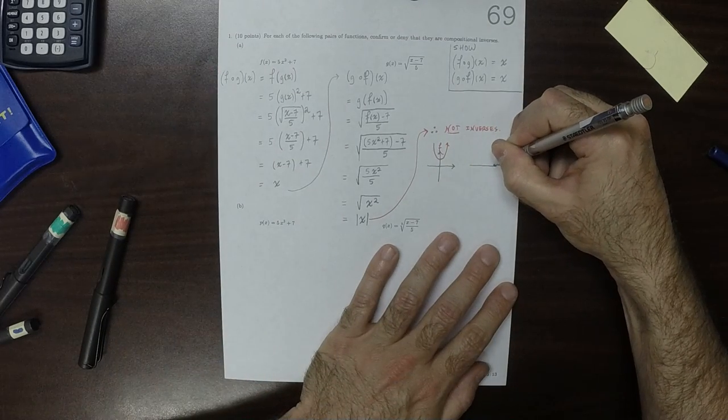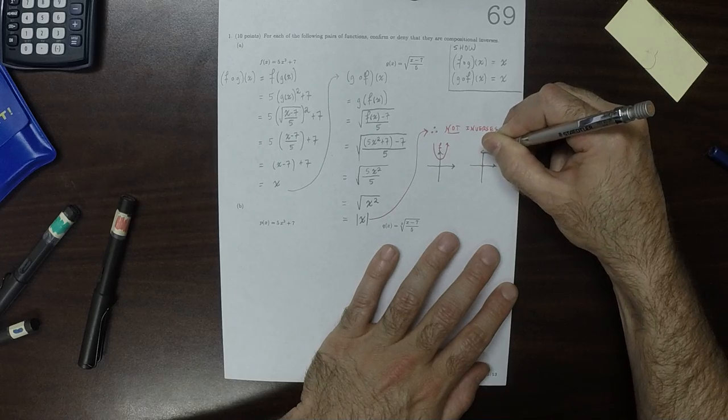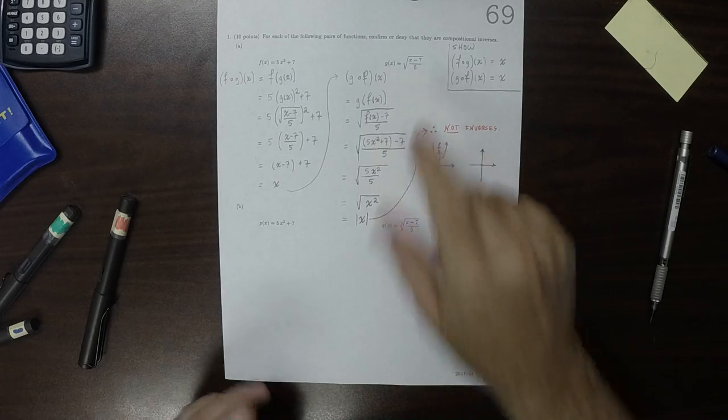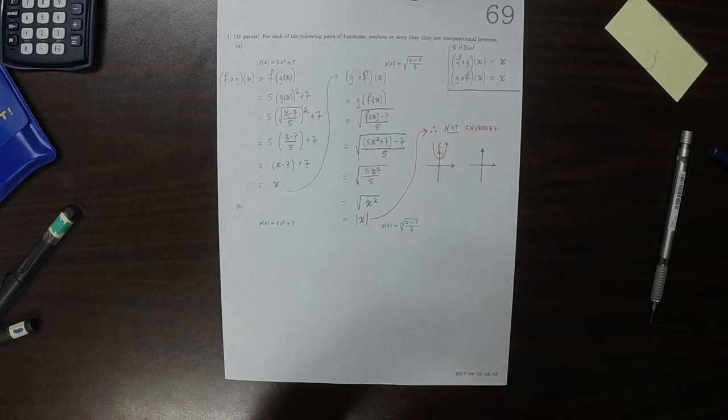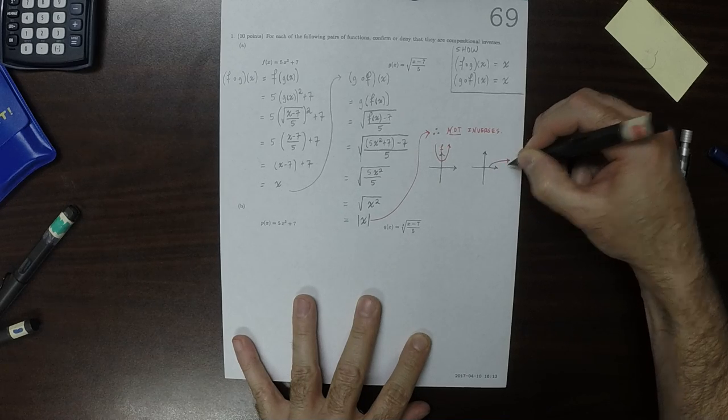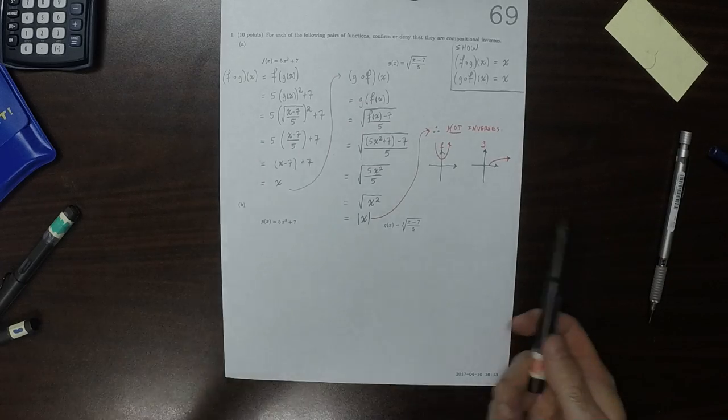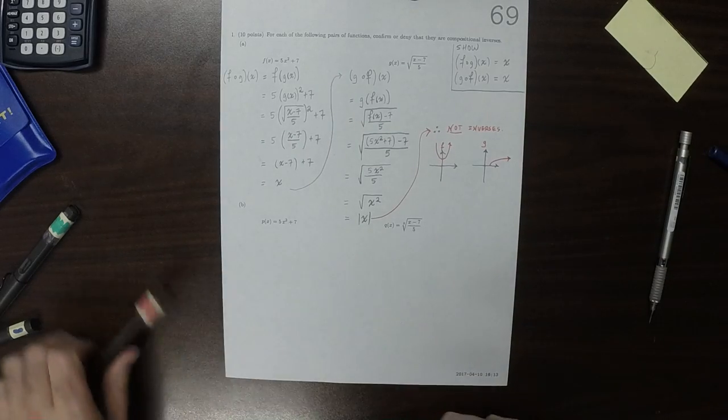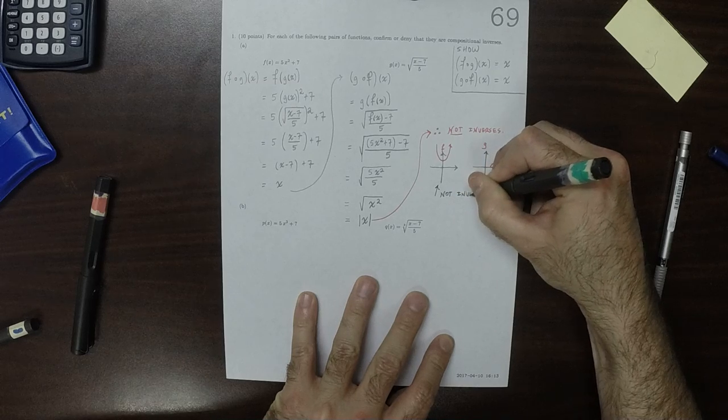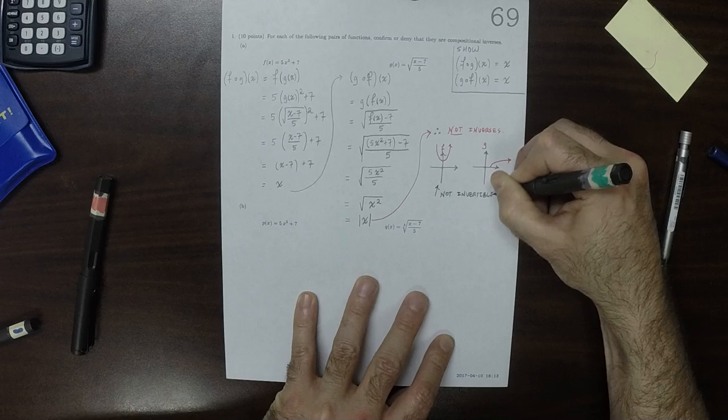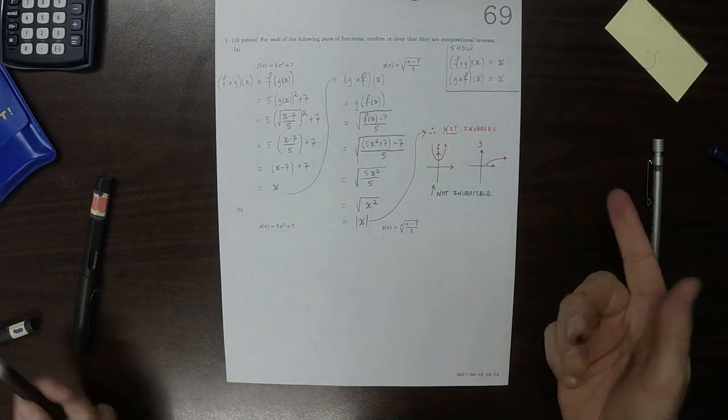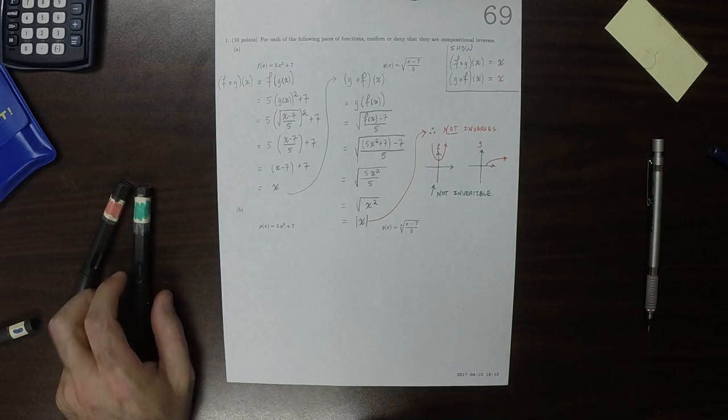And g looks like this. So that would be x minus 7, so at 7 is where it's 0. It will look like this. So this is the plot of g. So f is not invertible. So of course f and g can't be compositional inverses because f is not compositionally invertible in the first place.